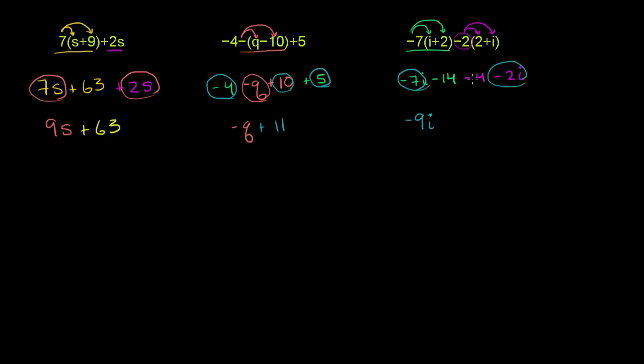And then negative 14 minus 4, those are our constant terms. That gives us negative 18. Negative 14 minus 4 is negative 18. And we are done.